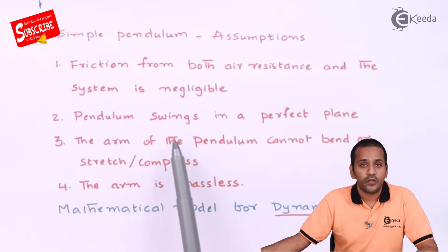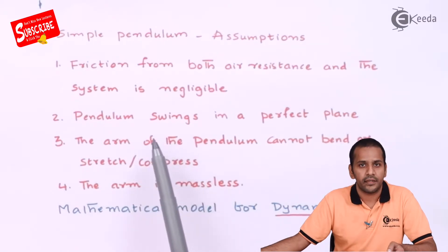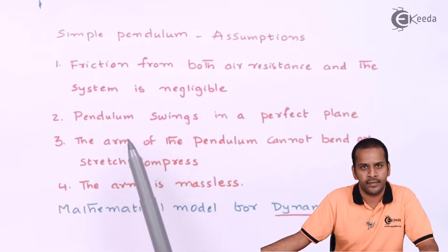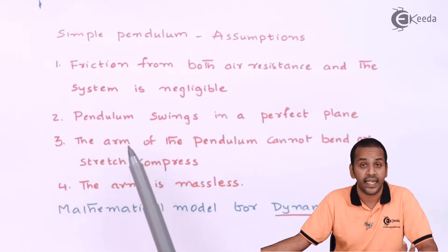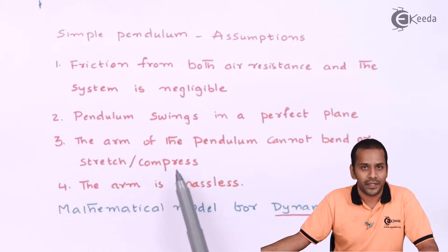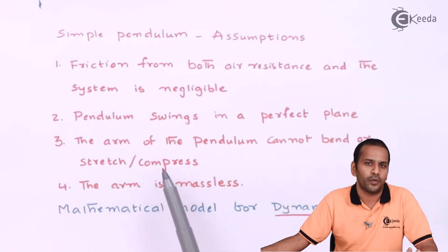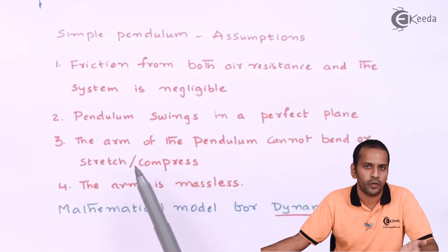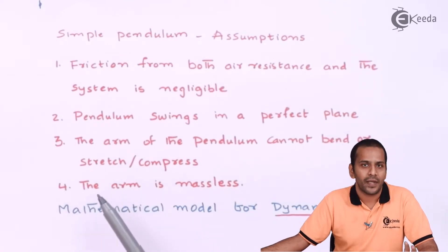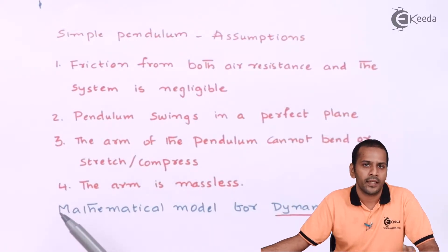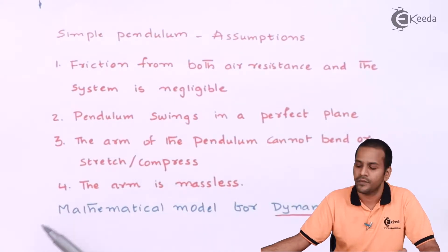Assumption two: the pendulum swings in a perfect plane — there is no swing of the pendulum out of the plane. Assumption three: the arm of the pendulum cannot bend, stretch, or compress; we assume the bob and rod as a rigid body. Assumption four: the arm is massless, meaning the mass of the rod compared to the bob is very, very small.